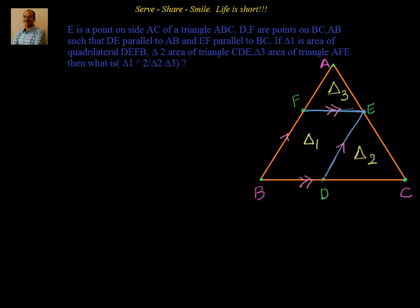E is a point on side AC of triangle ABC. D, E, F are points on BC and AB such that DE is parallel to AB and EF is parallel to BC. If delta 1 is the area of quadrilateral DEFB, delta 2 is the area of triangle CDE, and delta 3 is the area of triangle AFE, then what is delta 1 squared divided by delta 2 times delta 3? So what is the approach we will use to solve this problem?